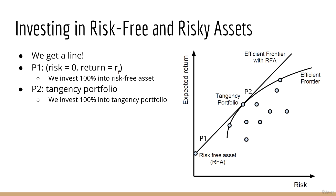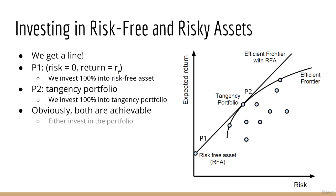Both of these endpoints are achievable. We already know how to find the portfolio with maximum Sharpe ratio, and we already know how to achieve zero risk by investing only in the risk-free asset — all you need to do is buy a T-bill.